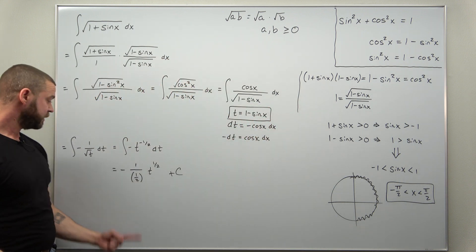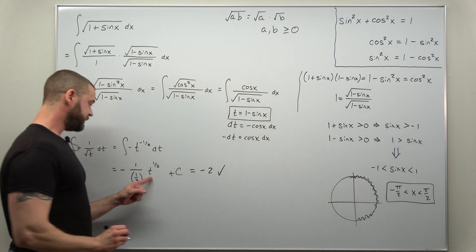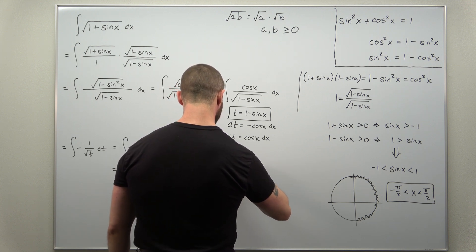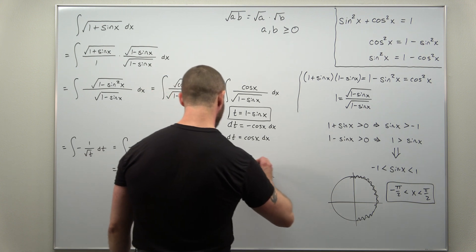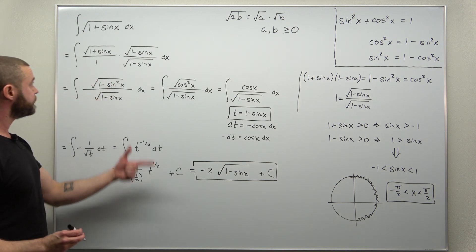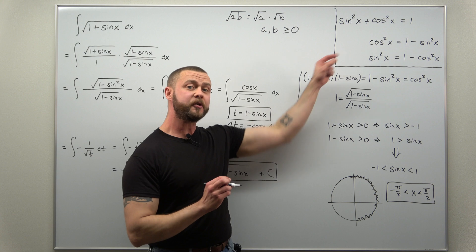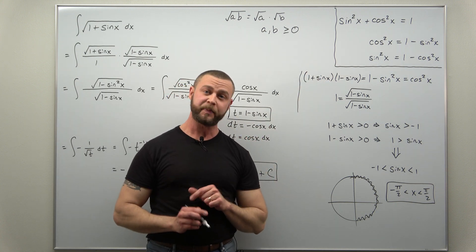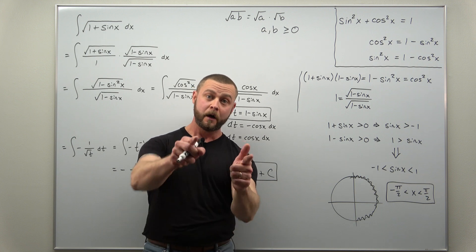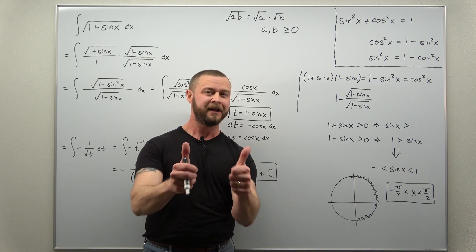We get negative two, and then t to the one half, which we can rewrite as the square root of one minus sine of x after back-substituting what we chose for t. And there we have our anti-derivative — the result of our integral — achieved with a creative algebraic trick of multiplying by one. We thought of that from our knowledge of algebra and basic trig identities. Hopefully you can start to see how you can build off existing knowledge to come up with your own algebraic tricks. Hope you enjoyed the video in our series the art of integration — if you're learning a lot, support the channel, like and subscribe.